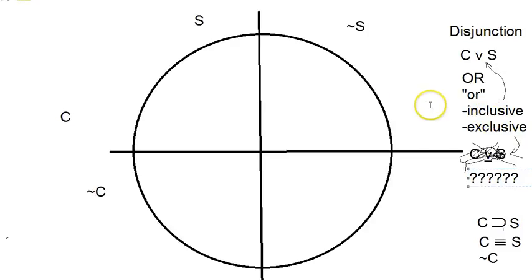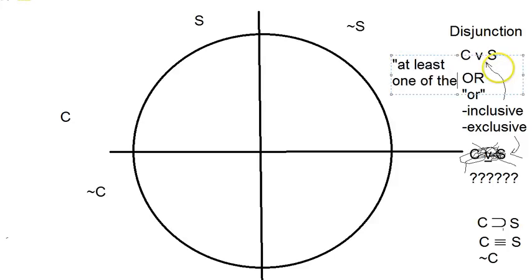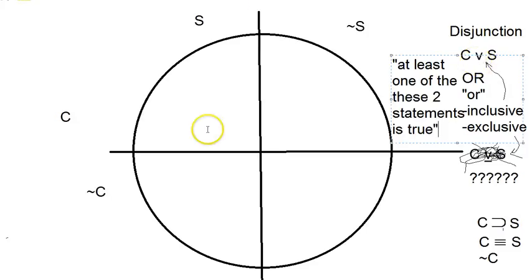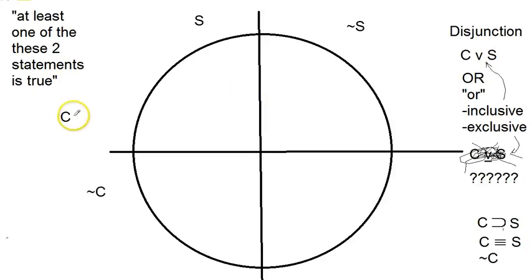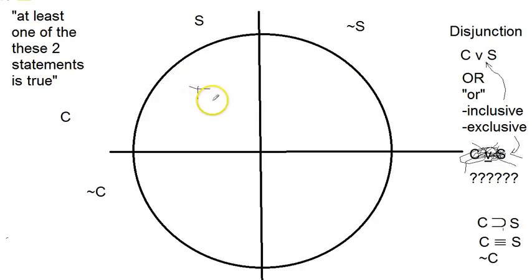The inclusive or is like saying 'at least one of these two statements is true.' So if I've got C or S, I'm saying at least one of the two of them is true. Let's see: if C and S are both true — Colonel Mustard is a murderer and Miss Scarlet is a murderer — is it true that at least one of them is true? Yes, so that possibility stays open. What if Colonel Mustard is a murderer but Miss Scarlet is not? Is at least one of these statements true? Well yes, so we leave that one open as well.